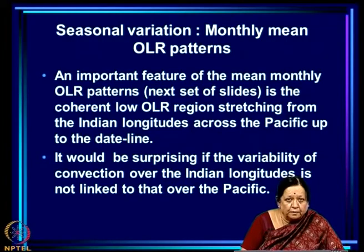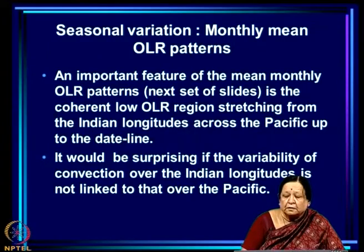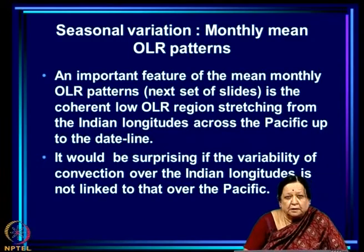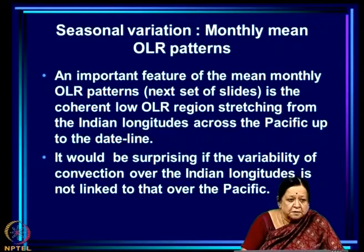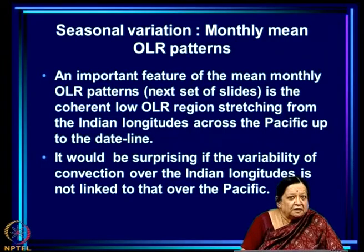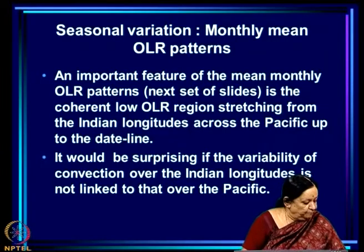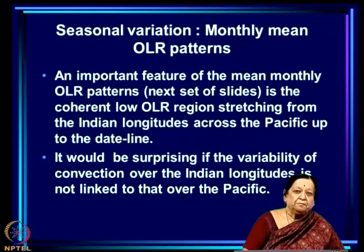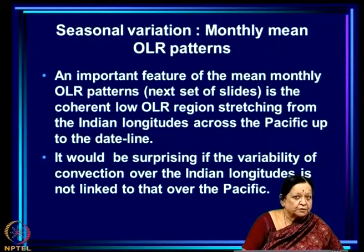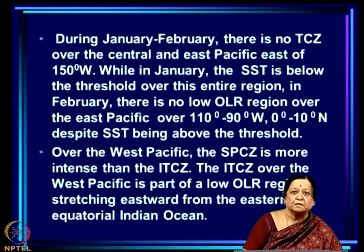Month after month you see this as a coherent low OLR region. It looks like what is happening over the Indian longitudes is part of a large system, of which the other part is over the Pacific. So it would be surprising if the variability of convection over Indian longitudes is not linked to that over the Pacific. In many ENSO studies people focus just on the Pacific, but we are interested in the monsoon, so we have to focus on both — understanding the coupling over both oceans is going to be important.